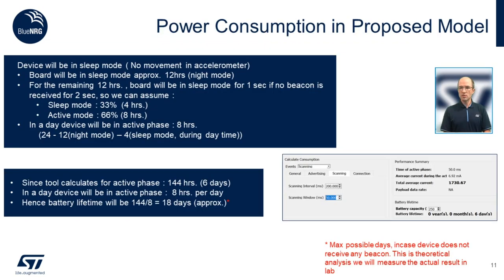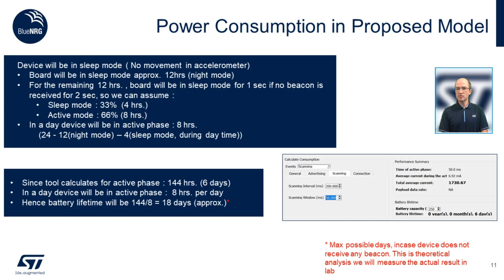In regards to power consumption, we took the following considerations. Nodes will be in sleep mode for 12 hours — we consider this as night mode. For the remaining time, the nodes will go into sleep mode for one second if no beacon is received for 2 seconds. With this assumption, we can say that 33% of the devices will be in sleep mode, that is 4 hours, and 66% of the time the devices will be in active mode, that is 8 hours. With these numbers, we get up to 18 days of battery life with a battery of 250 mAh capacity, which are really good results for this type of application.